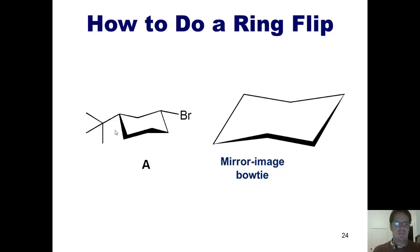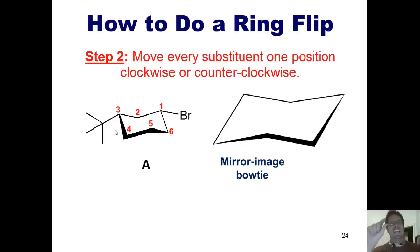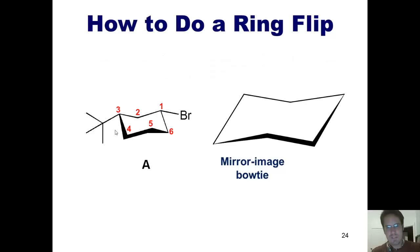Now to make clear the next step, I'm going to number all of the atoms in my original cyclohexane ring. Step two of our process is we have to shift every single one of these substituents one position, either clockwise or counterclockwise. I personally prefer clockwise. Carbon one is in the upper right hand corner. I'm going to shift it one position clockwise, which is going to be in the lower right hand corner. Carbon two was in this middle position, I'm going to shift it one position to the right or clockwise, which means that it's now going to be in the upper right hand corner. All of the rest of the positions follow suit.